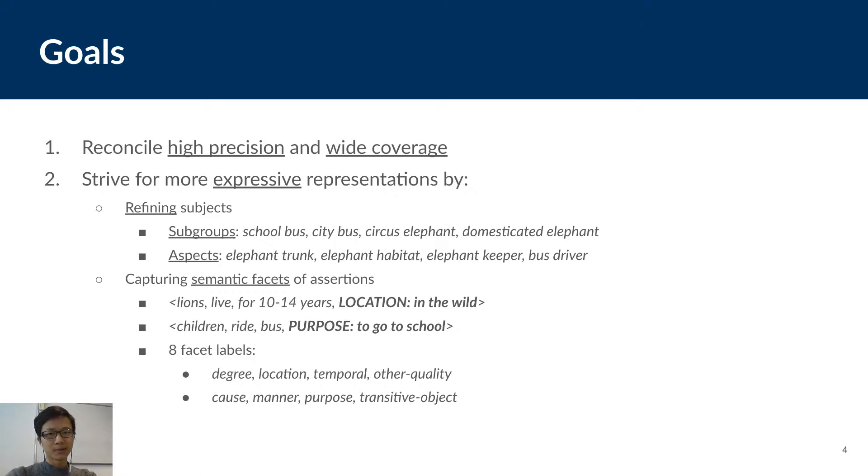So, the goals of our work include constructing a KB that reconciles both high precision and high recall. We strive for more expressive representations by defining subjects into subgroups and aspects, capturing semantic facets that qualify the validity of assertions like location or temporal, and capture other dimensions of context such as cause or purpose.